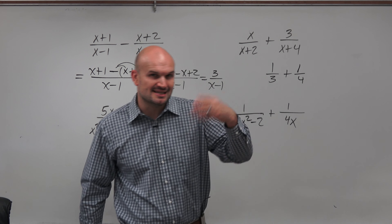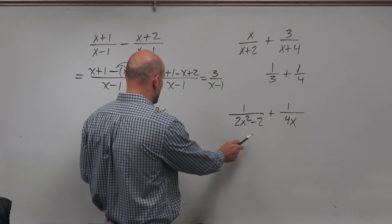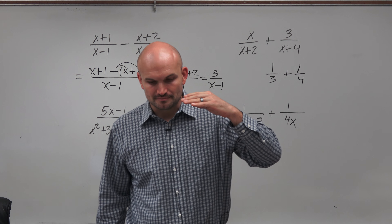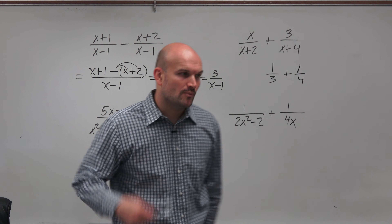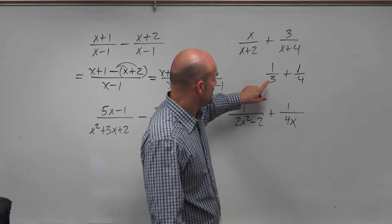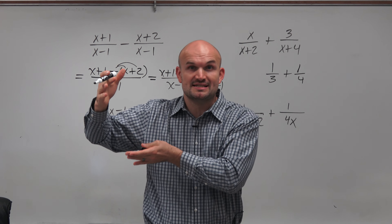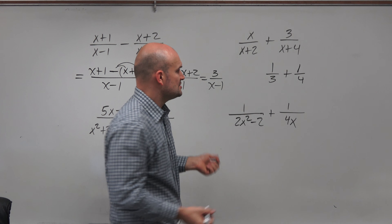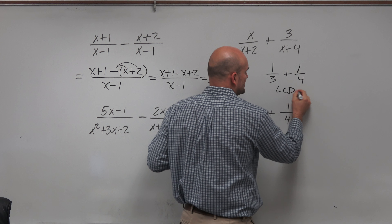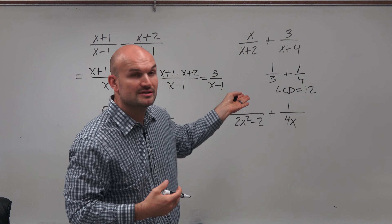With numbers, we can list the multiples to find the LCM, but with polynomial expressions that's not as straightforward. One approach is to simply multiply the two denominators together: 3 times 4 gives us 12, so we know both 3 and 4 divide into 12. Therefore the LCD here equals 12 — the smallest number that both 3 and 4 divide into.